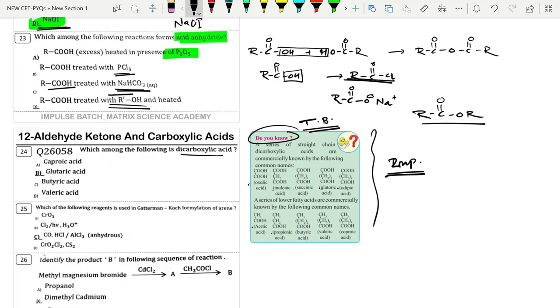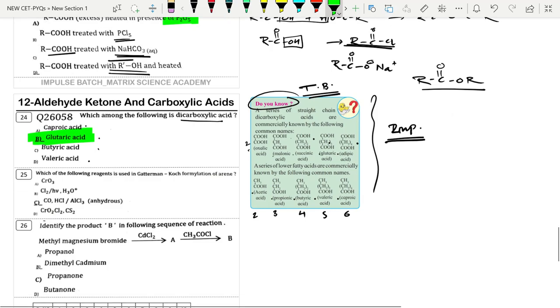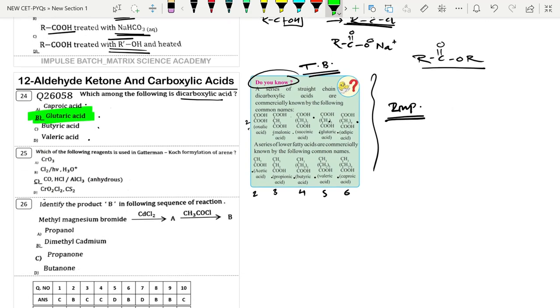Which is used for Gattermann-Koch formylation? Gattermann-Koch formylation uses CO-HCl in presence of AlCl3. The reaction is: benzene ring, we are adding CO-HCl in presence of AlCl3. The product is C double bond O-H - benzaldehyde is our final product.